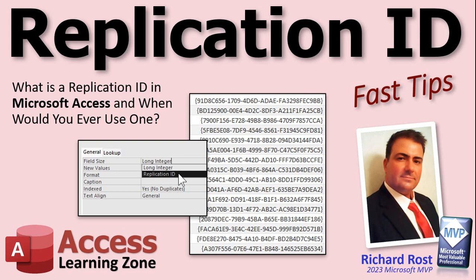This comes up a lot for students in my Access Beginner 3 class because I cover field sizes. If you look at an auto number, it has two field sizes: long integer, which is the default, and another one called replication ID. I always tell people don't worry about it — we'll talk about it in a future class. Quite honestly, it's something that most people will never use. In my near 30 years of working with Access, I've used it maybe twice.